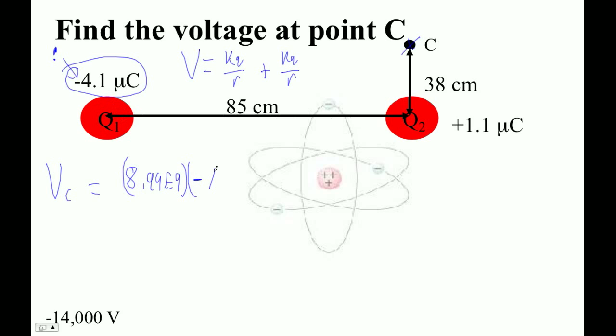So negative 4.1 E minus 6 over, and then this distance here is the square root of 0.85 squared plus 0.38 squared.